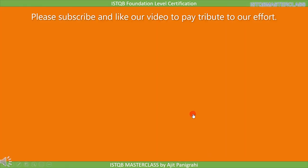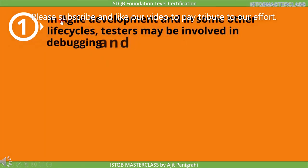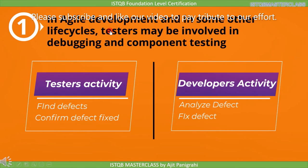The last topic was testing and debugging. We studied that in agile development and in some other life cycles, a tester may be involved in debugging and component testing. Testing activities are finding defects and confirming defects are fixed, whereas the developer's activity is to analyze defects and fix those defects.